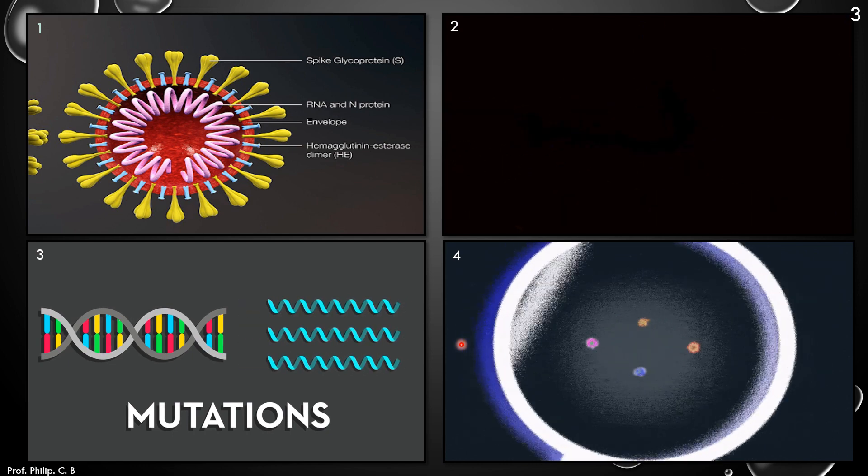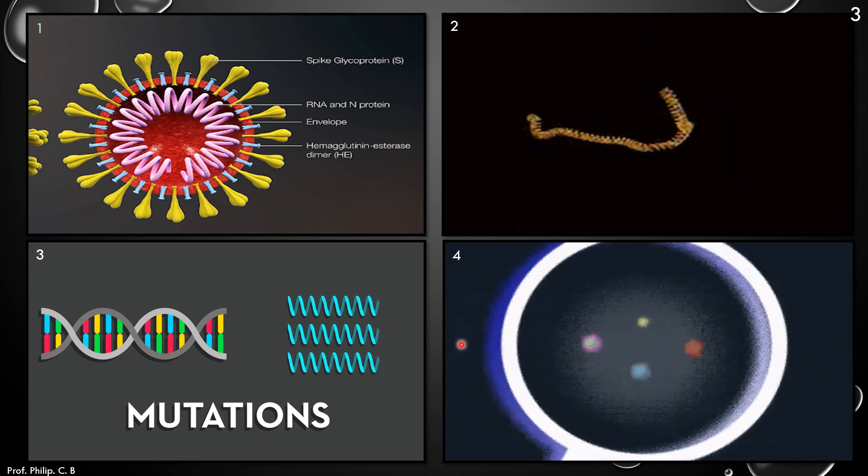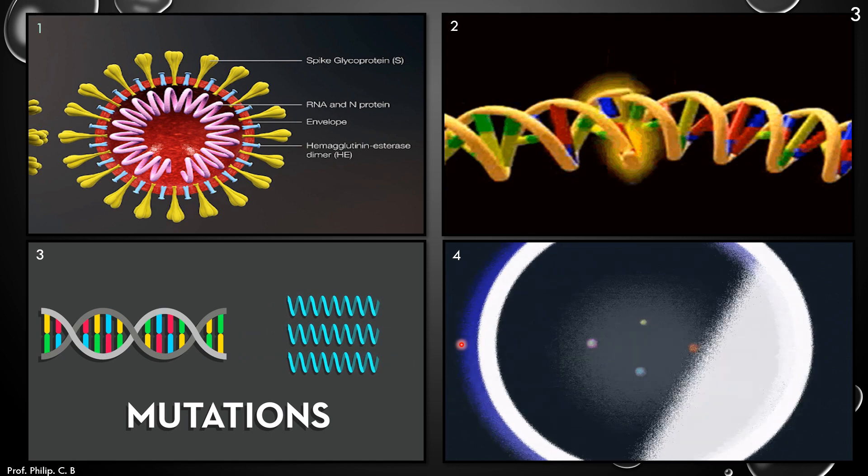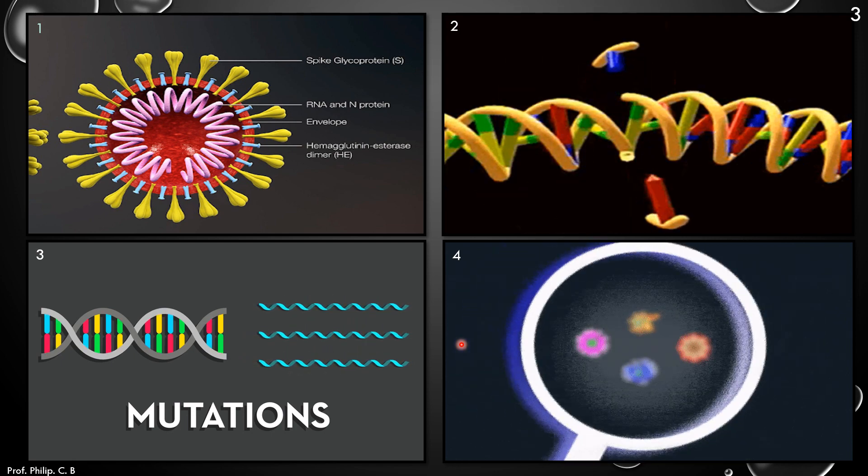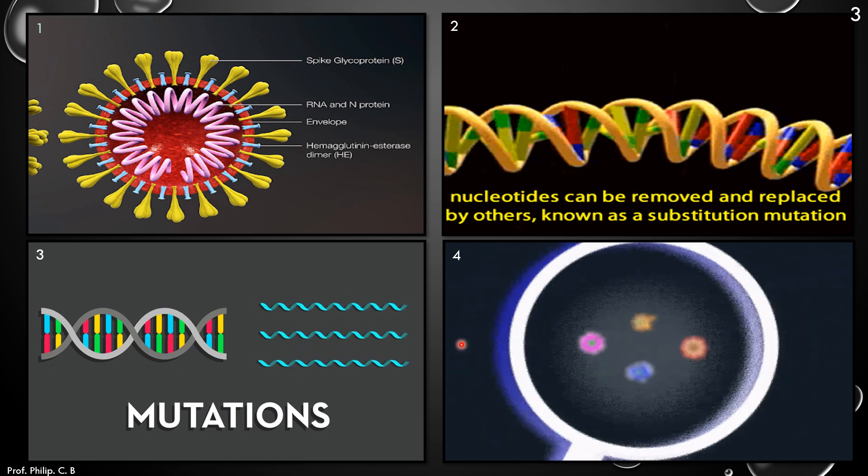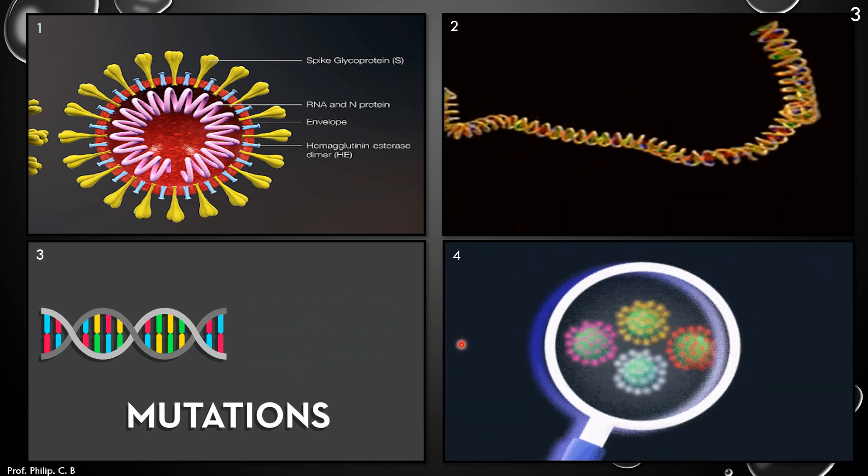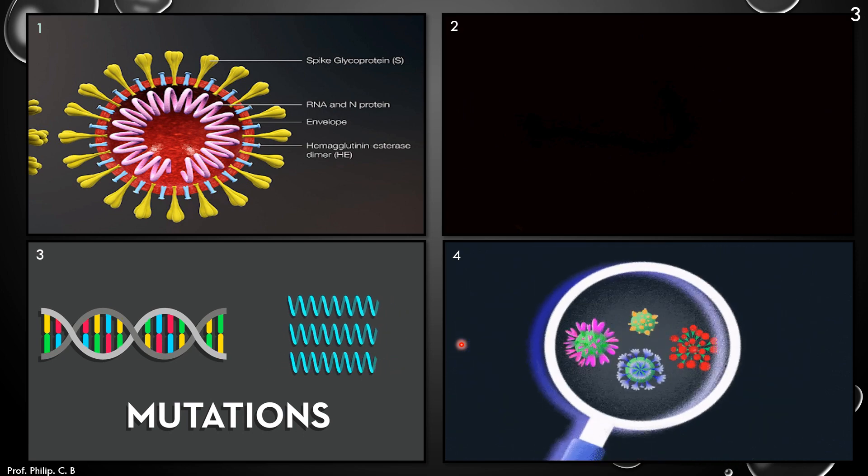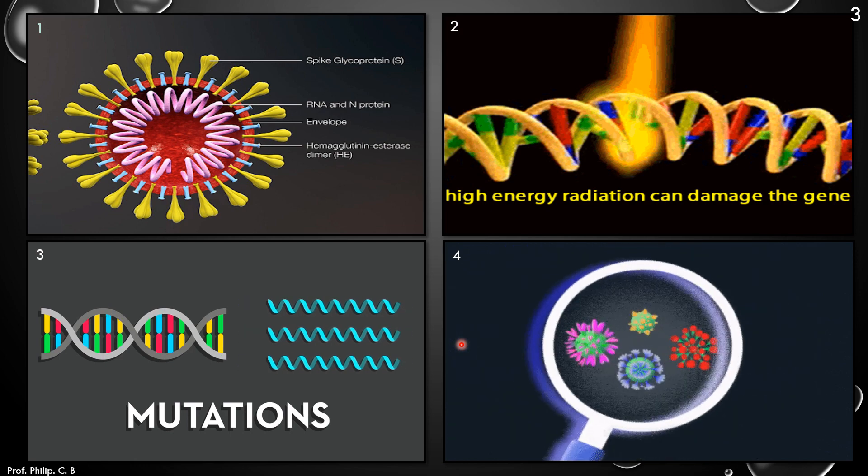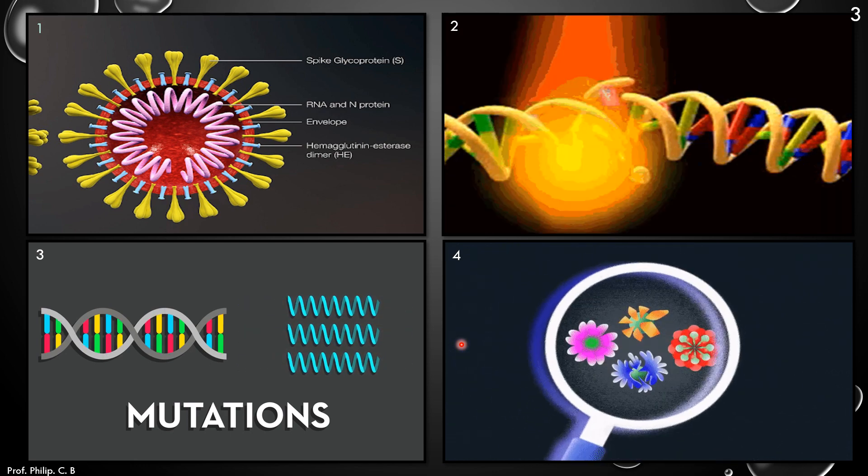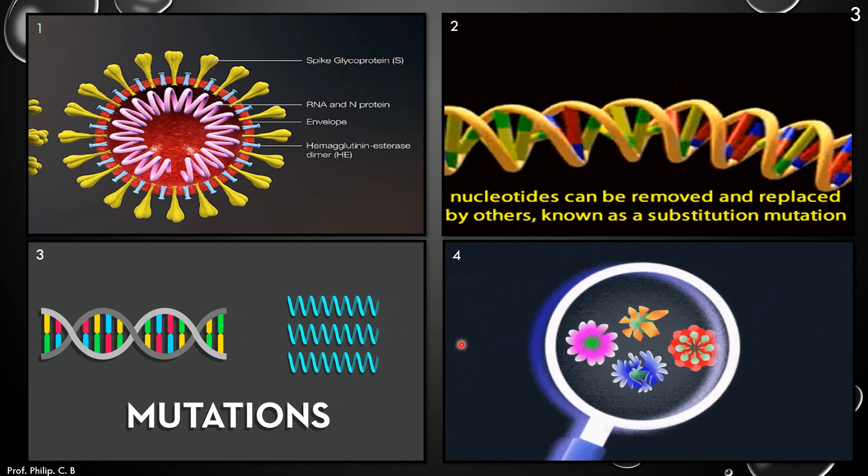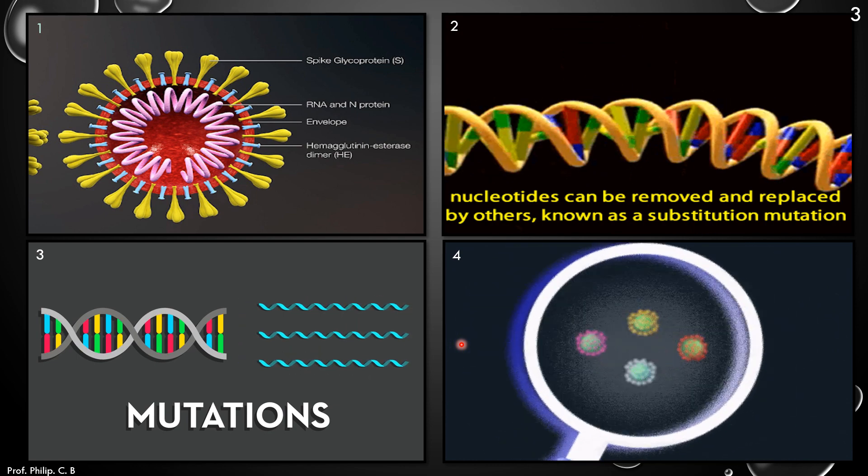Now what is the beneficial point of view? Because of mutations it leads to variation, and this variation if it is slow and gradual it may lead to evolution. So this evolution helps for the environmental benefit. Otherwise there will be no evolution, there will be no variation, there will be no new species found in the environment. So the mutations are also beneficial in a slow and gradual process.